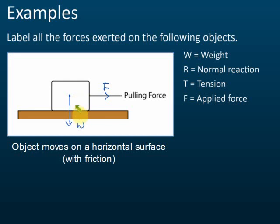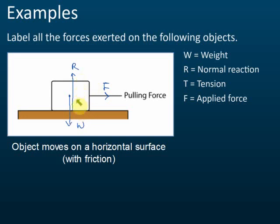The one more force is the normal reaction by the table. This object presses on the table, and the table gives a normal reaction back to this object. The normal reaction acts upward on this object and is denoted by the symbol R.